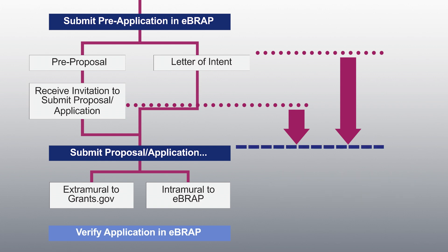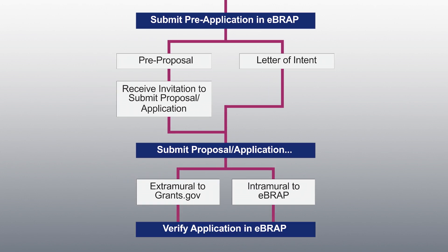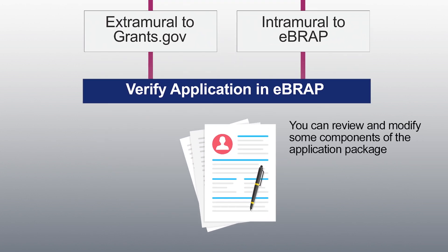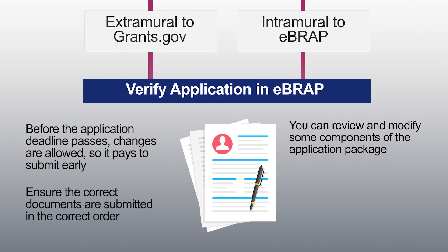For both intra- and extramural submissions, the applicant will receive an automated email notification stating that the full application submission is complete. The verification period begins after the application is submitted, as soon as it is available in eBRAP, and ends on the date specified in the funding opportunity. You can take advantage of this opportunity to review, verify, and make changes to components of your application package. Before the application submission deadline passes, changes are allowed on the entire package — so it pays to submit early.